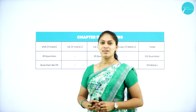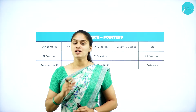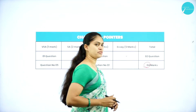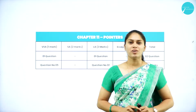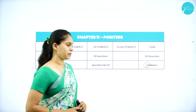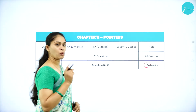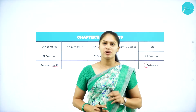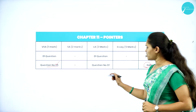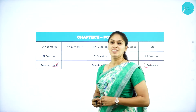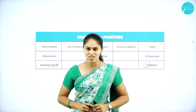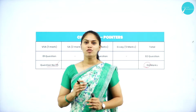Let me have a blueprint of this chapter. In this chapter you are going to get totally four marks. Four marks have been awarded for the pointer chapter — one mark for one question and three marks for one question. In your question paper, question number 5 is the one-mark question from the chapter called Pointer, and question number 22 will be the three-mark question from this chapter. So totally two questions and four marks.